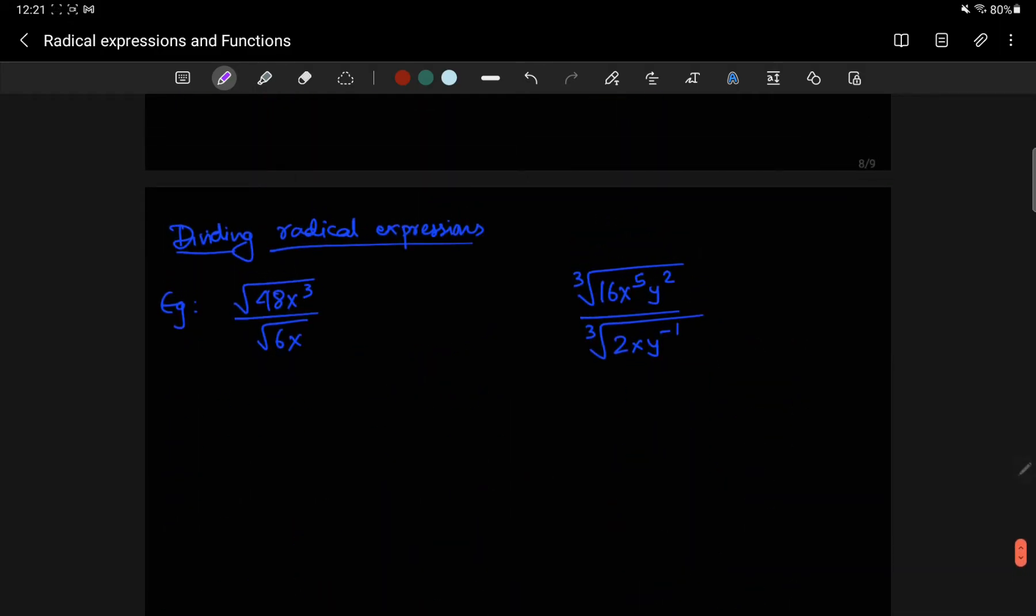Right here, first, I'm going to factor. Now, what is 48? 48 has a lot of factors. So, 2, 24, 12, 2, 6, 2, 3.